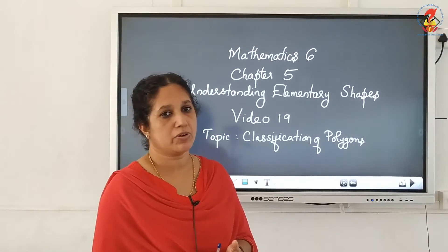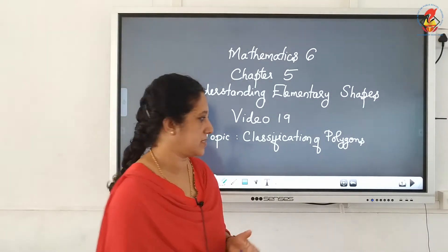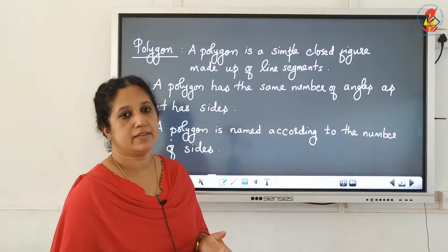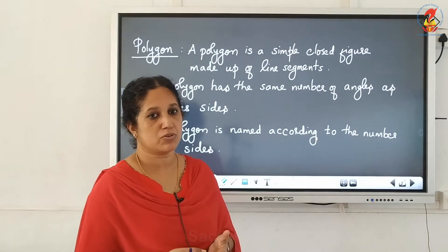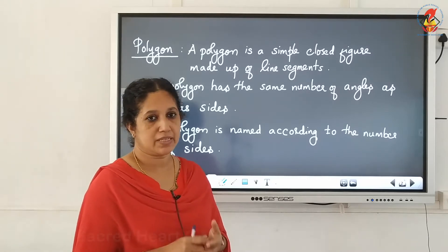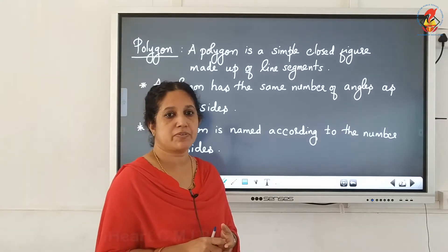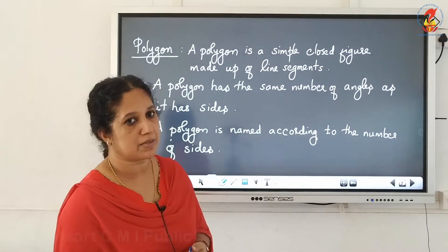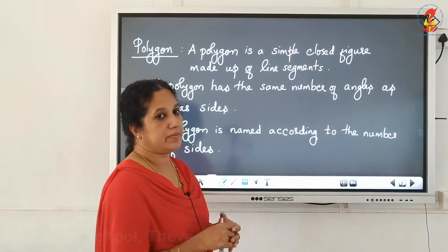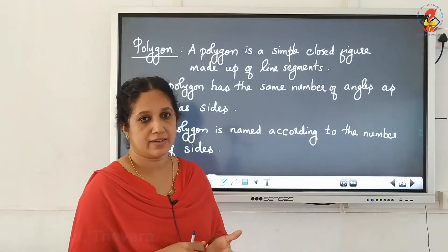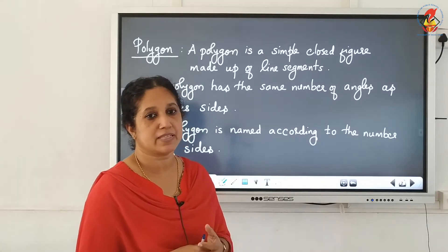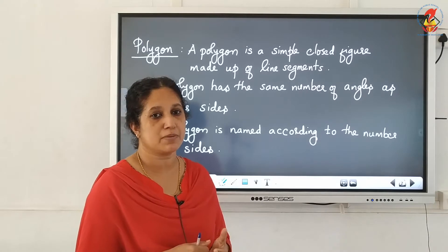Next topic is classification of polygons. A polygon is a simple closed figure made up of line segments. If the simple closed figure is made up of line segments, we can call it as a polygon. Triangles and quadrilaterals are all made up of line segments, so we can call them polygons.